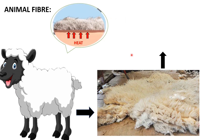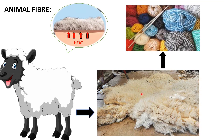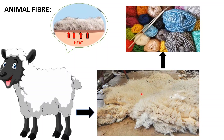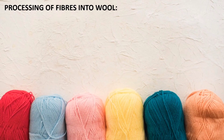The hair removed from the sheep is called fleece. It cannot be called wool yet because it has not been processed. After processing of fleece, we get wool fibers.